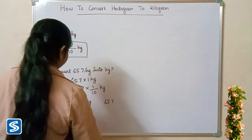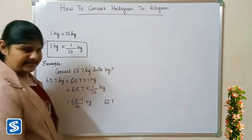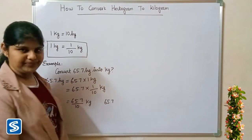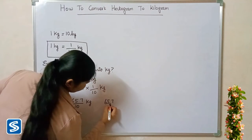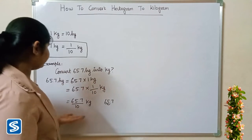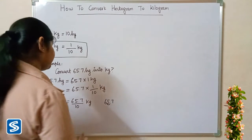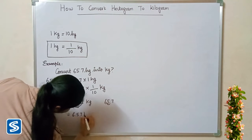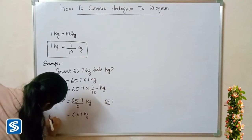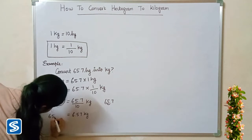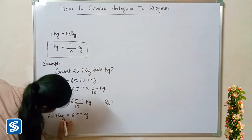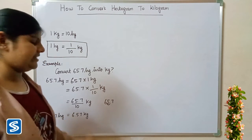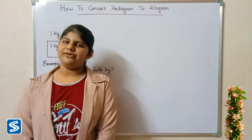The easy way to divide a decimal number by 10 is to move the decimal point one place to the left, because 10 has only one zero. So when we divide 65.7 by 10, our answer will be 6.57 kilograms. So 65.7 hectograms is equal to 6.57 kilograms.